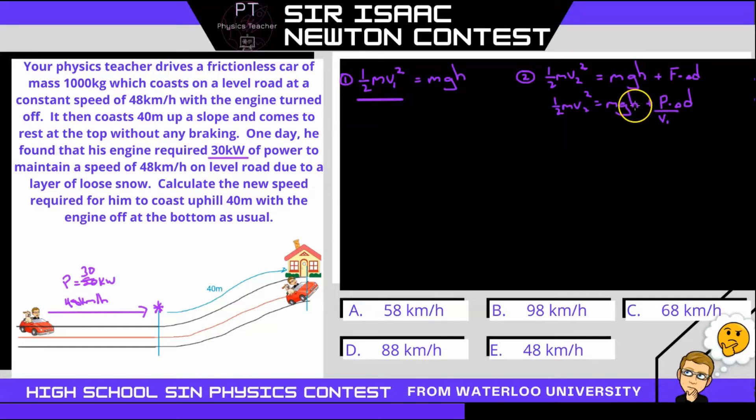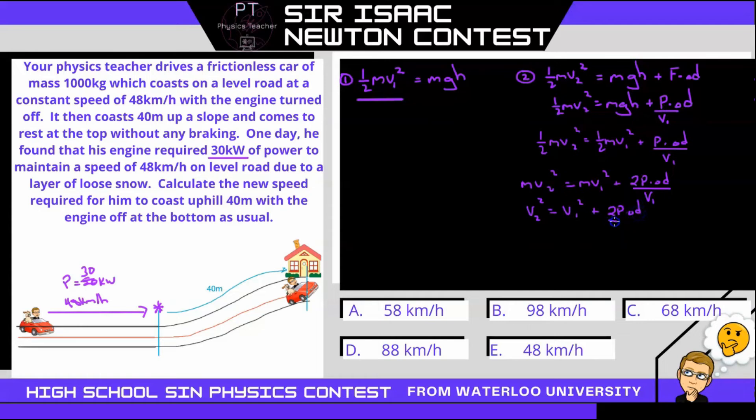This leaves us with one half m v2 squared equals one half m v1 squared plus power times displacement over v1. In this equation I know everything except for v2, so I can rearrange to solve for v2. I'll multiply both sides by two to get rid of this half term, so we have m v2 squared equals m v1 squared plus 2P delta d over v1. Divide both sides by m, so we have v2 squared equals v1 squared plus 2P delta d over m v1, and then we take the square root of both sides.